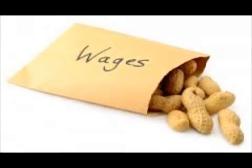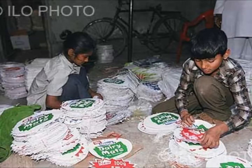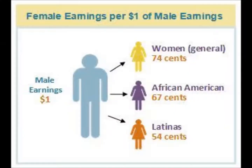Employees are exploited when it comes to wages. Some workers are paid very low wages. People use children because they can pay children lower wages than adults. Men may get higher wages than women.